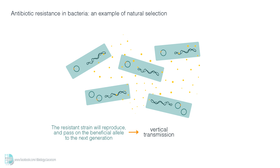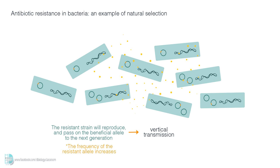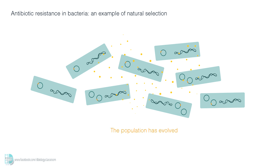The frequency of the resistance allele in the population increases. The process repeats and causes more and more members of the population to have the antibiotic resistance. The population has evolved. It is very possible that after some time, the antibiotic is completely useless against the bacteria.